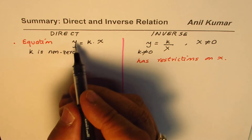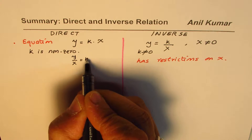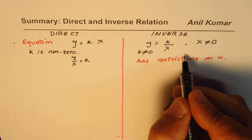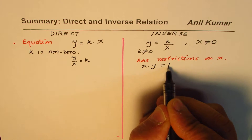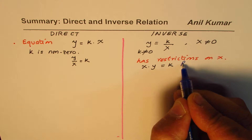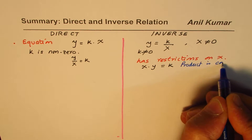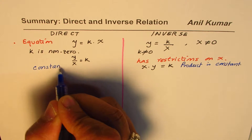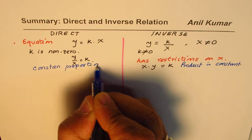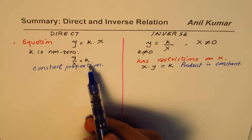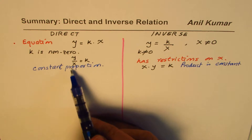These equations can be written in different forms. For direct relation, we can write y over x equals constant — this gives us a constant proportion, which is also why k is called the constant of proportion. For inverse relation, we write x times y equals constant — meaning the product is constant.